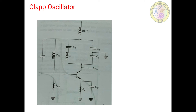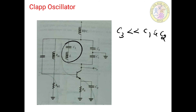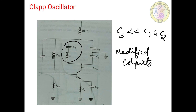In order to overcome this drawback, a small modification is made in the tank circuit: the inductor L is replaced by a series combination of capacitor C3 and inductor L. The value of C3 is taken as very small compared to C1 and C2 — that is, C3 << C1 and C2. With this modification, the stability of the circuit is improved because the frequency of oscillation now depends only on capacitor C3 and not on C1, C2, or any stray capacitors. This modified Colpitts oscillator is known as the Clapp oscillator.